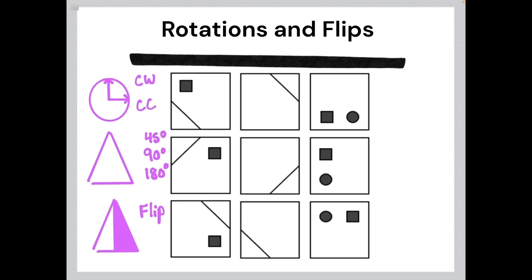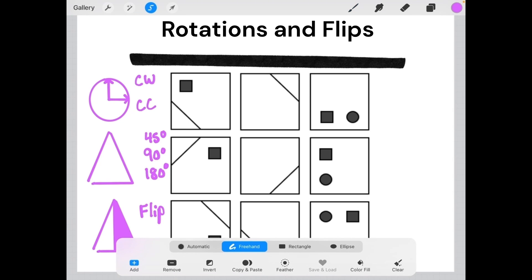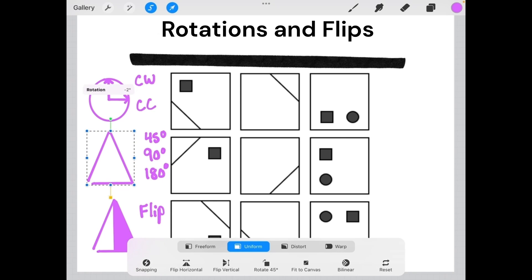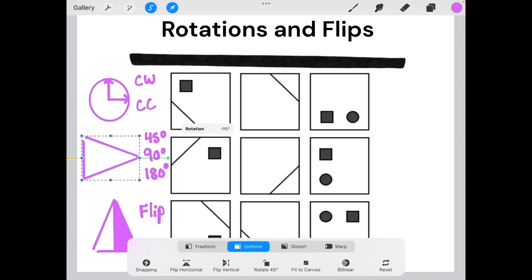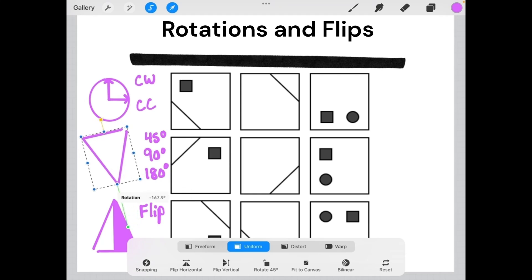Rotations can also be done in different degrees. The three most common rotations for a shape like a triangle are 45 degrees, 90 degrees, and 180 degrees.